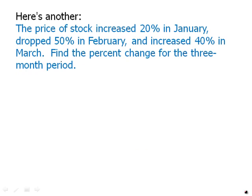Here's another example. The price of a stock increased 20% in January, dropped 50% in February, and increased 40% in March — the first quarter of the year. Find the percent change for this three-month period, the percent change for the first quarter. Pause the video and see if you can work this out.